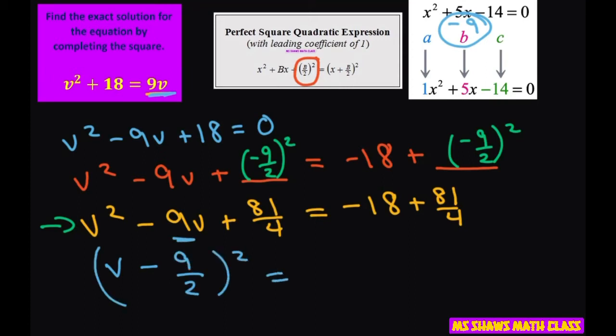Now to do the right side I need to multiply the 18 times 4. So basically what you're doing is you want the same common denominator, and what I'm going to do is take this. I want a 4 here. So I'm going to multiply this by 4. And that's going to give me negative 72 plus 81 divided by 4. So that's going to give me 9 fourths.